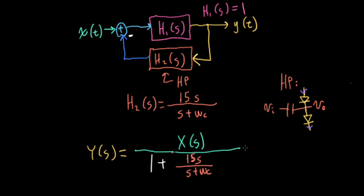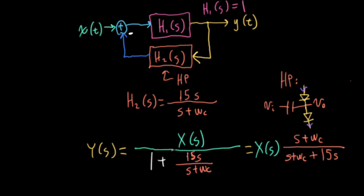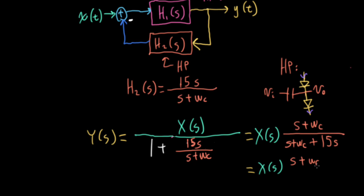So simplifying this, I could write this as big X of s times s plus omega-c. So I'm multiplying the numerator and denominator by s plus omega-c. This is a kind of pattern that you're going to see a lot of examples of over the next several lectures, over s plus omega-c. That comes from multiplying 1 times s plus omega-c. And then when I multiply this particular term here by s plus omega-c, the s plus omega-c and the numerator and denominator cancel. And I have plus 15s left.